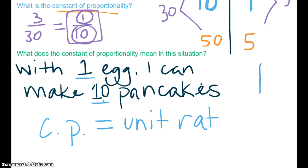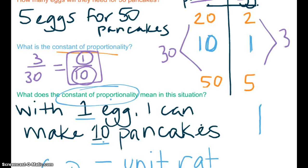Alright, pause and rewind as much as you need. What I really want you to get out of this is that the constant of proportionality will be your unit rate in addition to how to manipulate the ratio table.